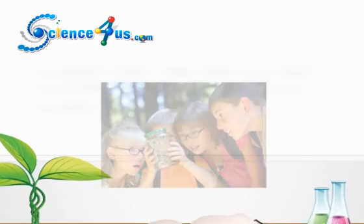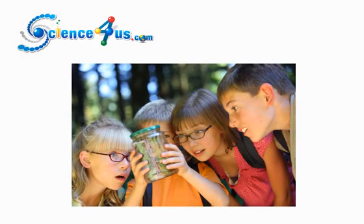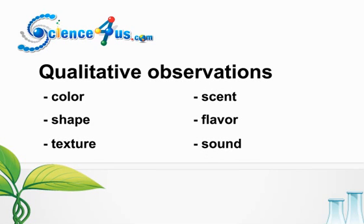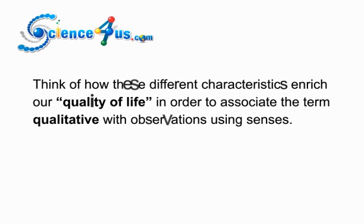Matter can be observed and described using our five senses. These are called qualitative observations and describe the color, shape, texture, scent, flavor, or sound of the object or substance being observed. Think of how these different characteristics enrich our quality of life in order to associate the term qualitative with observations using senses.